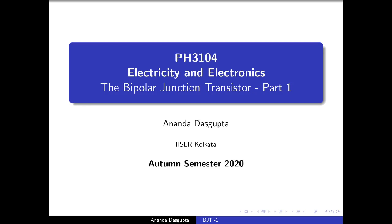Before we go on to talk about the BJT, let me quickly tell you something about the vacuum triode, which used to be the central thing in electronics when vacuum devices were ruling the roost and which essentially gave us our first amplifiers. The basic idea of a vacuum diode is actually very simple. In a vacuum diode, you had two electrodes, a cathode and an anode. The cathode was heated so that it would emit electrons through thermionic emission, and the anode was supposed to receive the electrons as long as it was positively charged. This ensured that in a vacuum diode, current would flow only in one direction — from cathode to anode for electron flow, and from anode to cathode for conventional current flow.